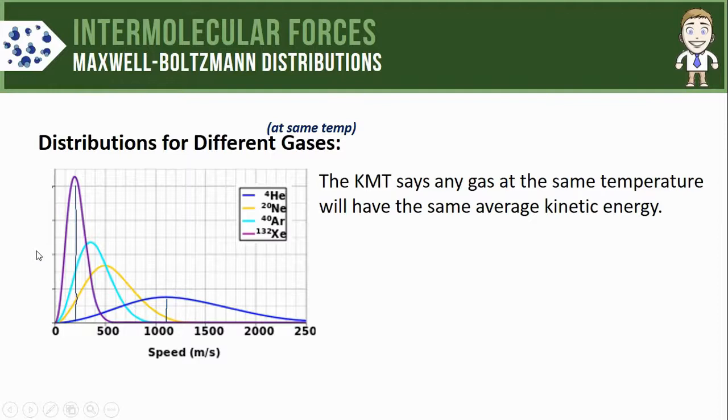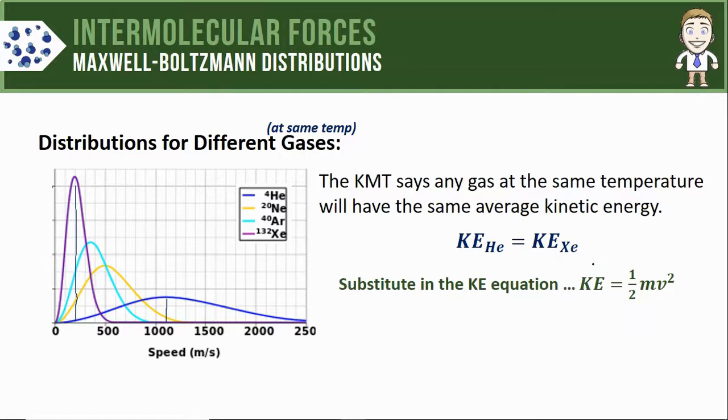bring back one of the components of the kinetic molecular theory, which says that any gas at the same temperature will have the same average kinetic energy. Since all of the gases on this graph are at the same temperature, I could choose any two of them and write a little mathematical representation of this statement. For example, the kinetic energy of the helium particles must equal the kinetic energy of the xenon particles. Next we can substitute in our